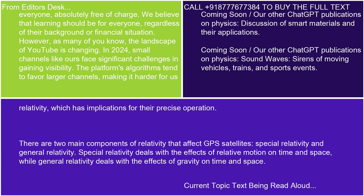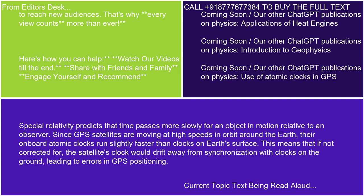Special relativity deals with the effects of relative motion on time and space, while general relativity deals with the effects of gravity on time and space. Special relativity predicts that time passes more slowly for an object in motion relative to an observer. Since GPS satellites are moving at high speeds in orbit around the Earth, their onboard atomic clocks run slightly faster than clocks on Earth's surface. This means that if not corrected for, the satellite's clock would drift away from synchronization with clocks on the ground, leading to errors in GPS positioning.